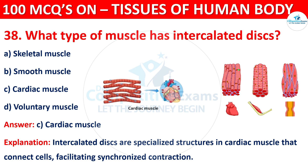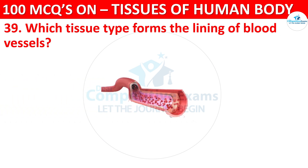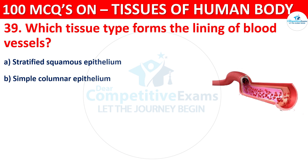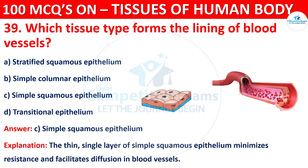Question number 39. Which tissue type forms the lining of blood vessels? Options are Stratified Squamous Epithelium, Simple Columnar Epithelium, Simple Squamous Epithelium, or Transitional Epithelium. The correct answer is C, that is Simple Squamous Epithelium. A thin single layer of simple squamous epithelium minimizes resistance and facilitates diffusion in blood vessels.